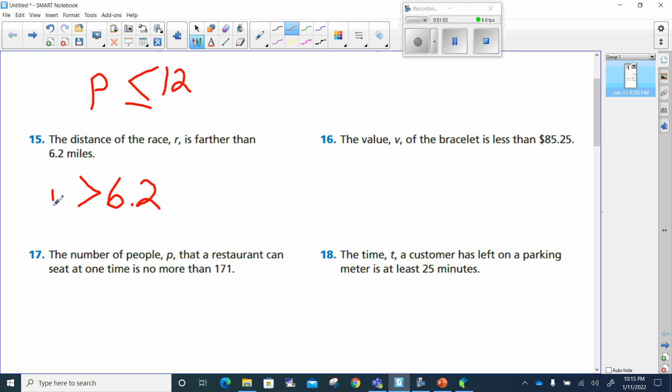And that means r is farther than 6.2. Now it's very possible you might see some people write these like 12 is greater than or equal to p. Could even write this one as 6.2 is less than r. So if they put it to the opposite sides, just make sure your symbol is turning the opposite direction.